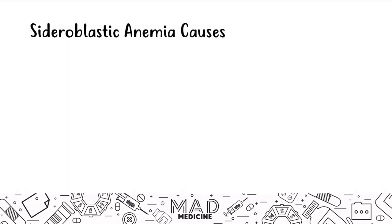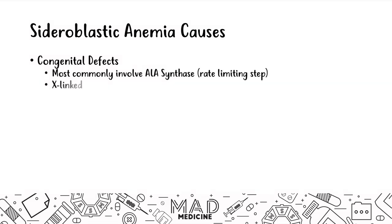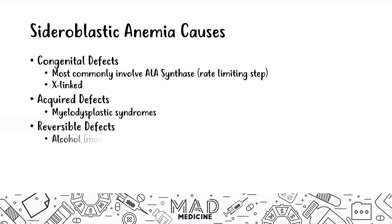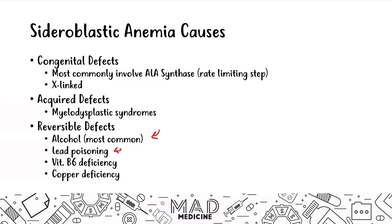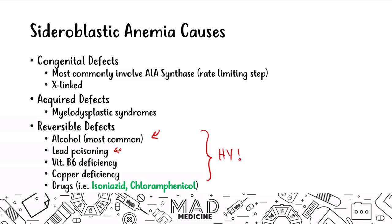The causes of sideroblastic anemias include congenital causes, which are most likely going to involve 5-ALA synthase — the rate-limiting step — and these are X-linked disorders. You can have acquired defects like myelodysplastic syndromes, and then you can have reversible defects like alcohol intoxication, which is probably the most common cause of sideroblastic anemias. You can also have vitamin B6 deficiency, copper deficiency, and lead poisoning. Drugs like isoniazid and chloramphenicol can also cause sideroblastic anemia. All of these prevent the production of protoporphyrin and hence reduce the production of heme, giving you a microcytic anemia.